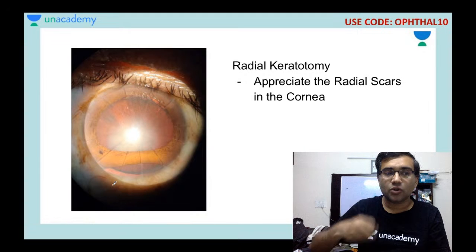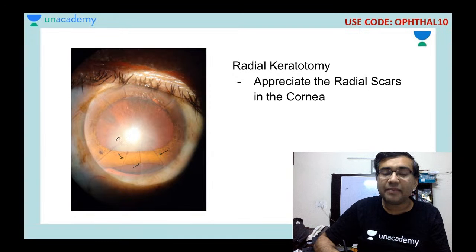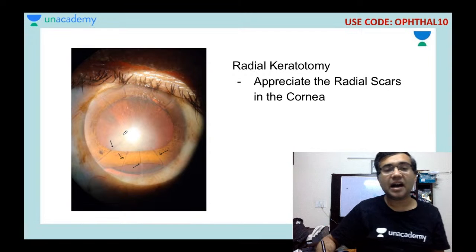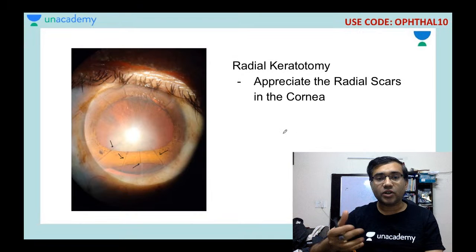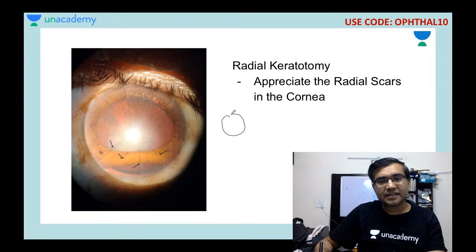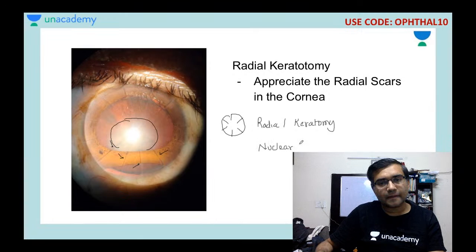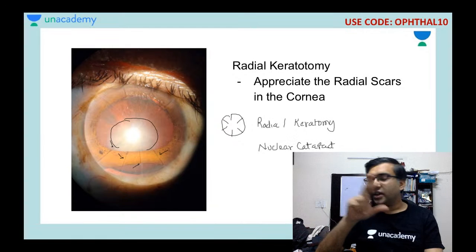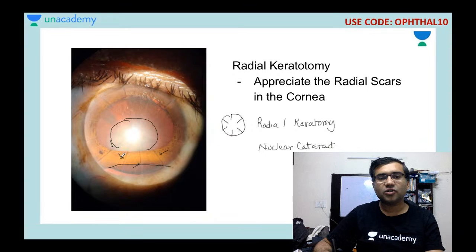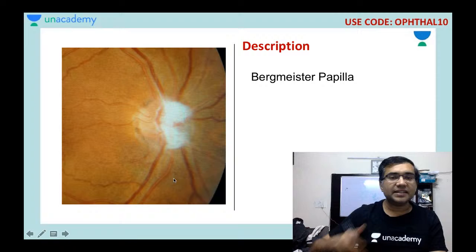This picture shows three findings simultaneously. First, there are multiple scars in the cornea, called radial keratotomy scars. Second, there is a nuclear cataract visible as a whitish structure. Third, the patient also has iridodialysis — the iris disinserted from its root in the periphery. Multiple findings in a single image are common in MCQ-style questions.